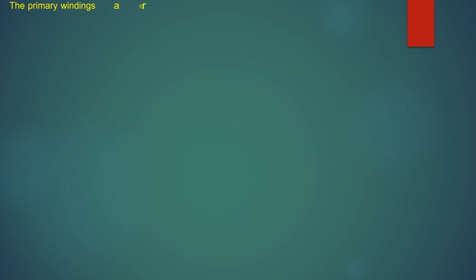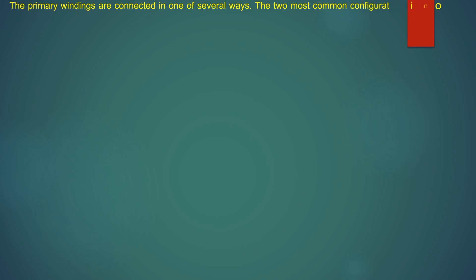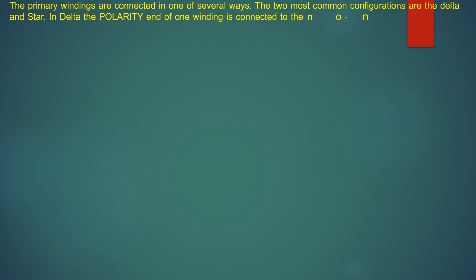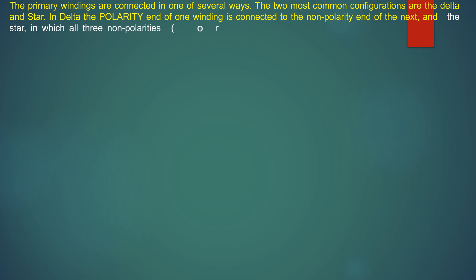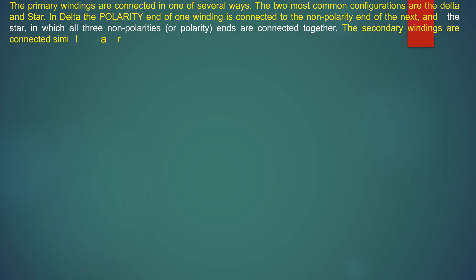The primary windings are connected in one of several ways. The two most common configurations are delta and star. In delta, the polarity end of one winding is connected to the non-polarity end of the next. In star, all three non-polarity or polarity ends are connected together. The secondary windings are connected similarly.